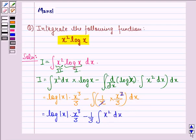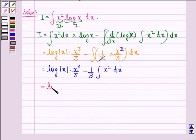This is equal to log of mod x into x cubed by 3 minus 1 by 3 into integral of x squared dx is x cubed by 3 plus a constant c.